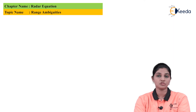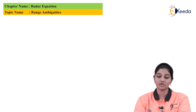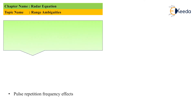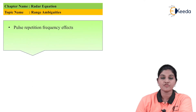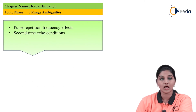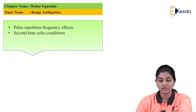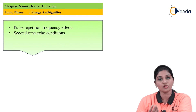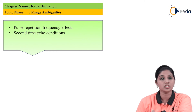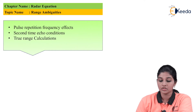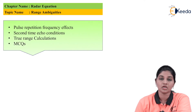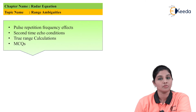We are also going to discuss the following points: Pulse Repetition Frequency effect, then we will have a discussion about second time echo condition — what do we mean by second time echo condition or multiple time echo condition — then we will find out the true range calculation, and then we'll end the topic with the help of some MCQs.